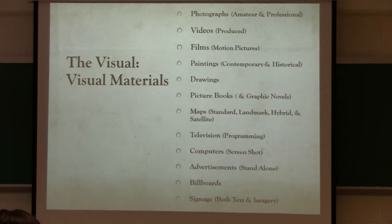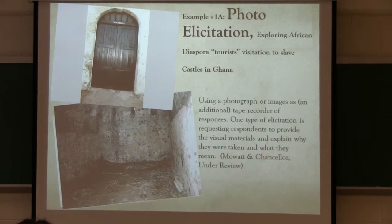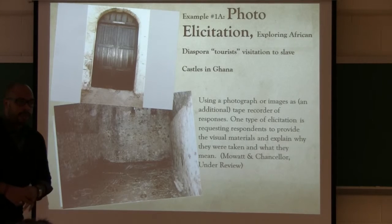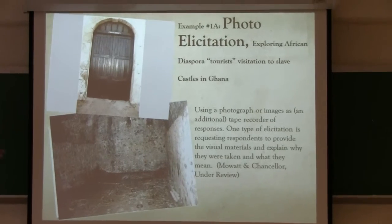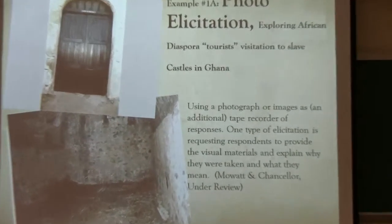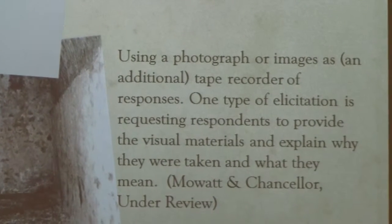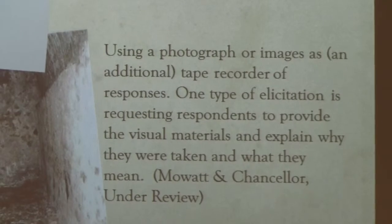So these are all the things that could be used for the source material. So let's look at some examples — stop me if there's a specific question. There's one area called photo elicitation, and there are actually two different types. One type is where we solicit from respondents to take pictures. They take pictures and bring them back to us, and we discuss what's being depicted.